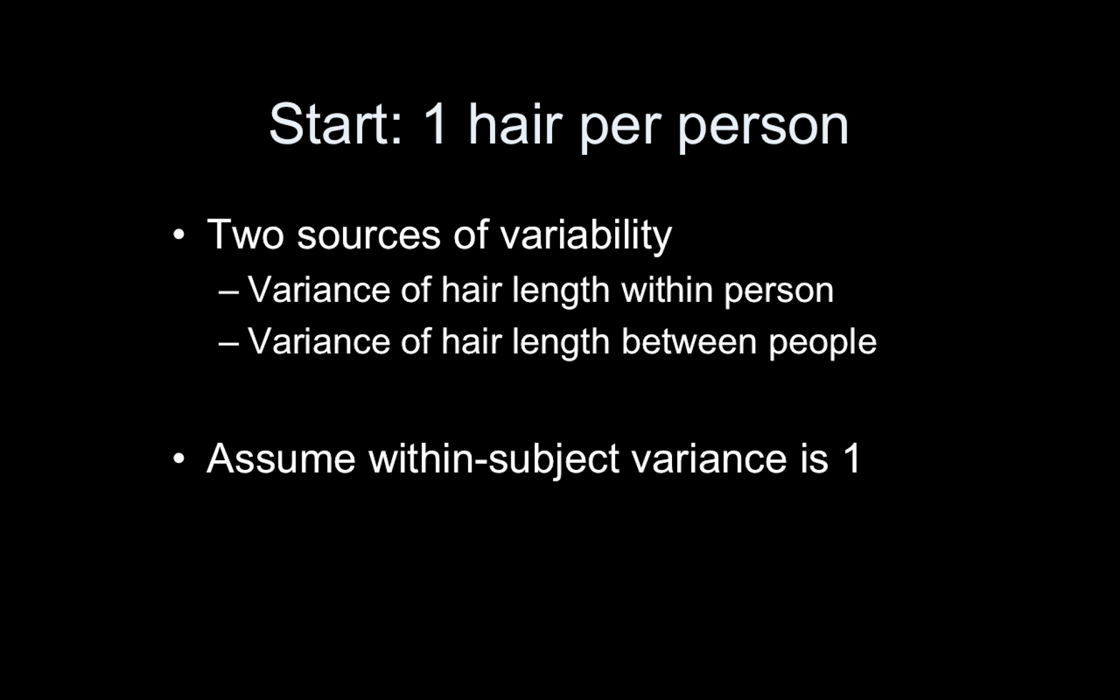We're going to start our statistical analysis by collecting a single hair per person. So this is a really special study because I'm going to assume an oracle has come down and told me the variance, one of the variance terms, actually two of the variance terms. So in that sense, this is special, but it's just for illustration purposes. Now let's think about hair for a second. With hair, we have two sources of variability.